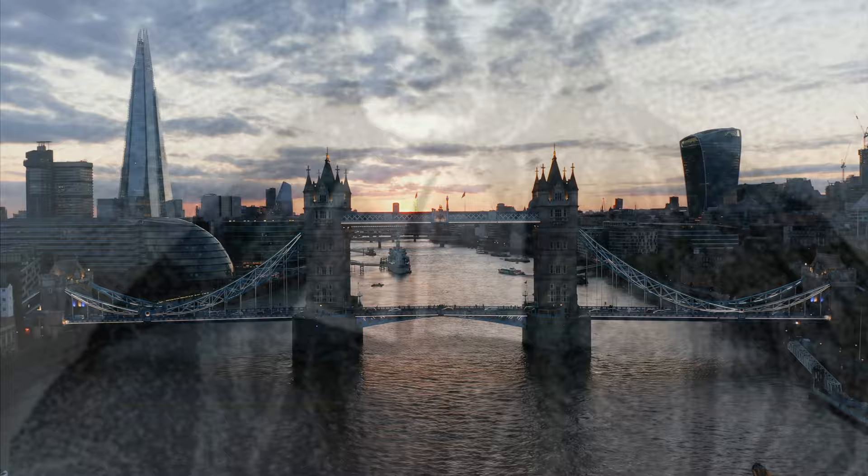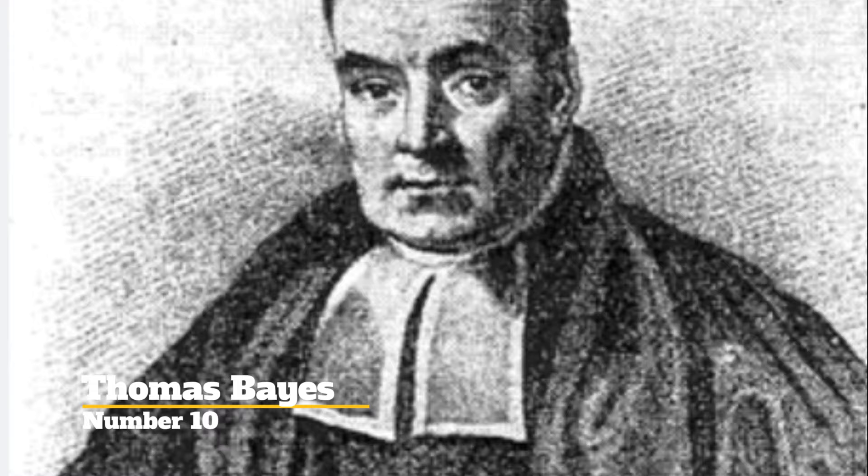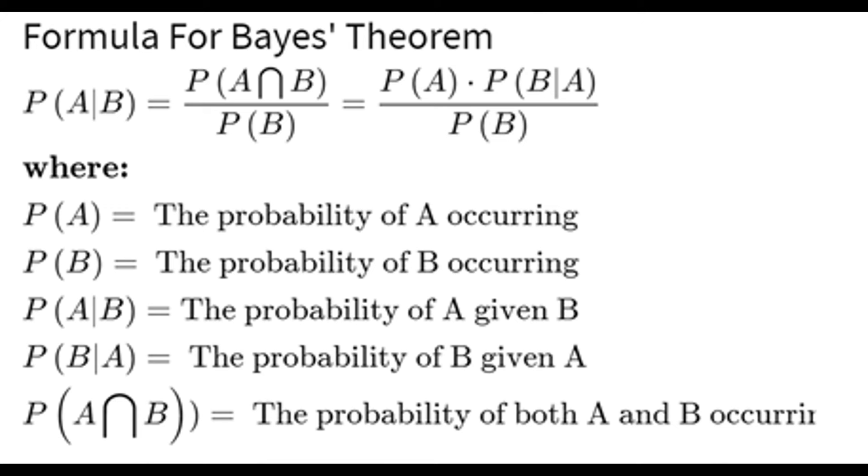Number 10. Thomas Bayes. Thomas Bayes, an 18th century English statistician, made profound contributions to mathematics, most notably through his development of Bayes' theorem. This theorem provides a mathematical framework for updating probabilities based on new evidence, forming the cornerstone of Bayesian inference.